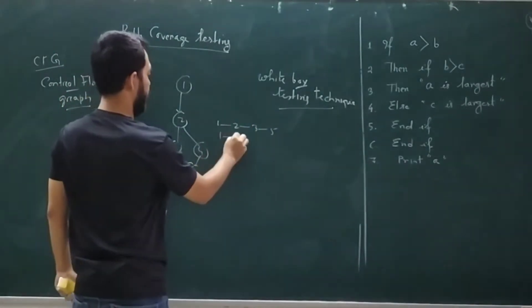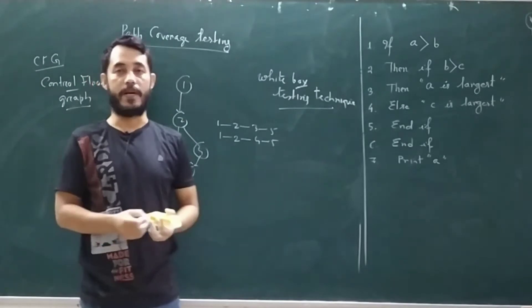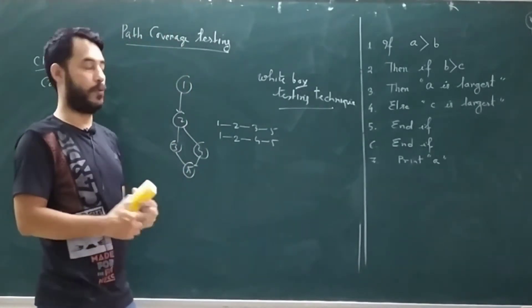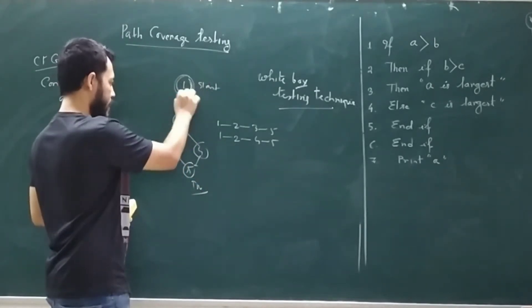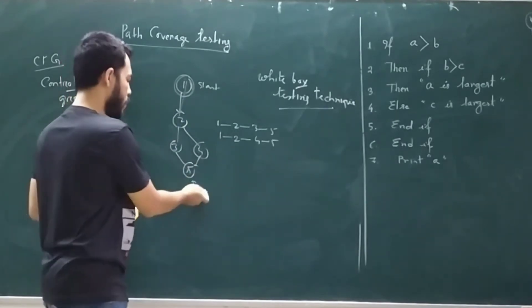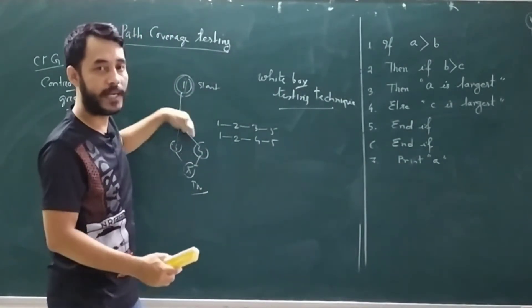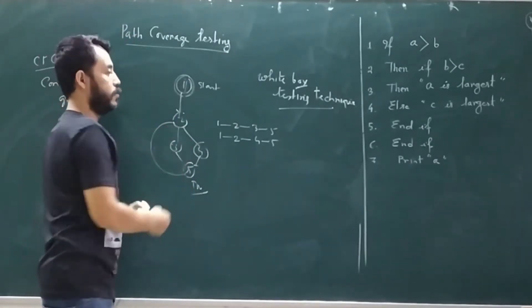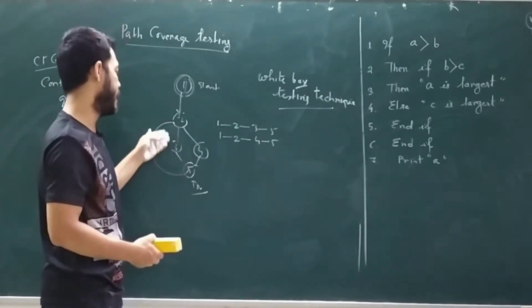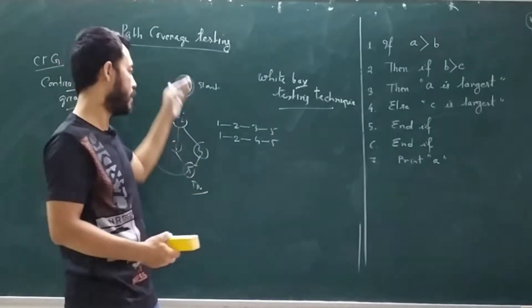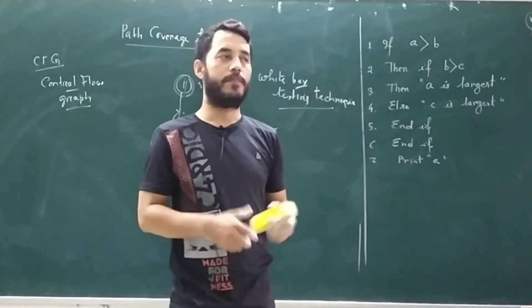A path is a sequence of some adjacent nodes in a CFG. For example, 1→2→3→5 is a particular path, and 1→2→4→5 is another path. A path goes from the start node to the terminal node. If your program has multiple terminal nodes or looping conditions, the number of paths increases significantly — for example, a loop running 100 times means at least 100 paths.